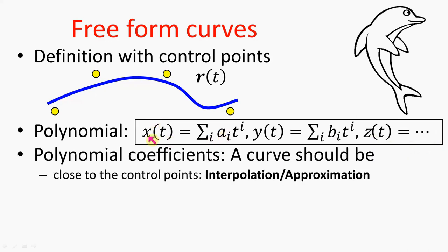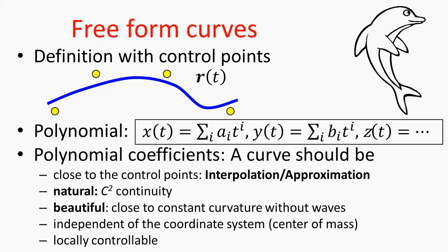We are going to use polynomials where the unknowns are the degree of the polynomial and the polynomial coefficients such as ai or bi. We want our parametric curve to follow the sequence of control points. There are two different levels of compromise: we call the curve an interpolation curve if it goes through the specified control points, and if the curve just goes close to them, we talk of approximation. Even in the case of interpolation, there are infinitely many solutions — infinitely many different curves that go through the specified control points but can do anything in between.